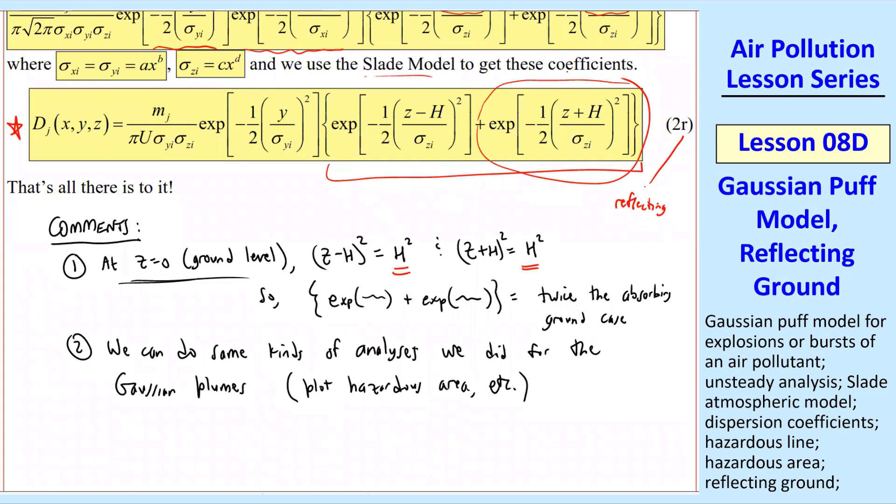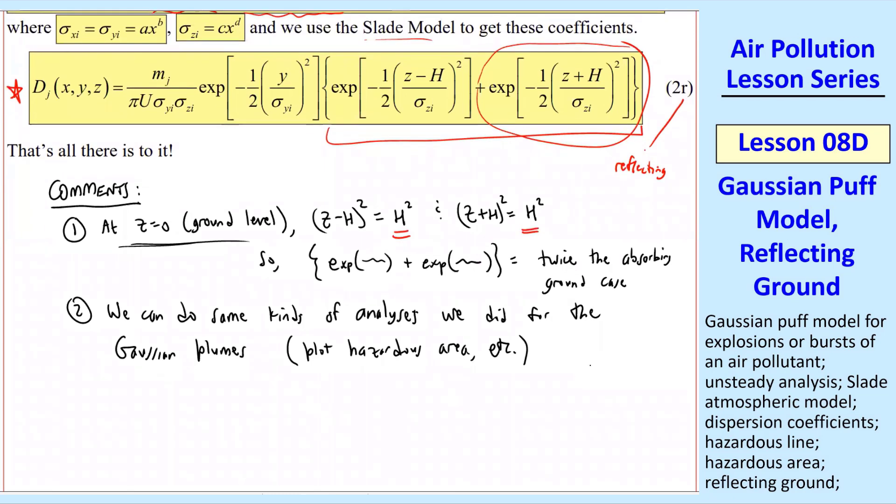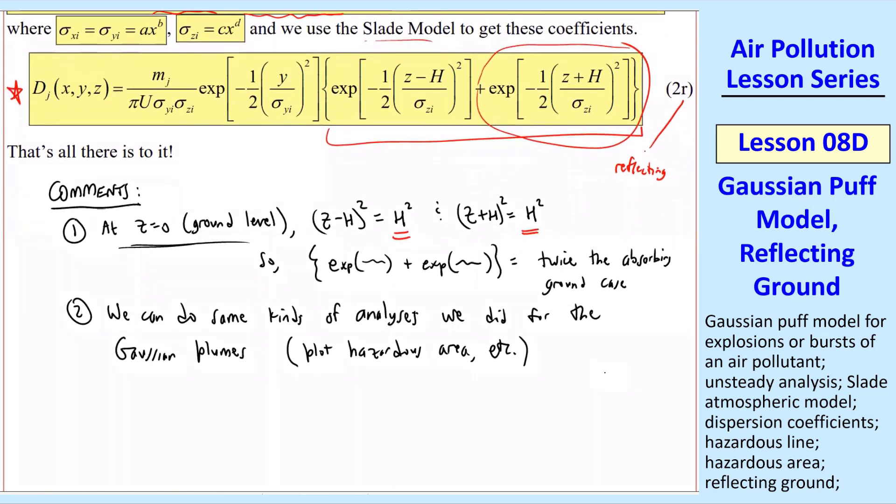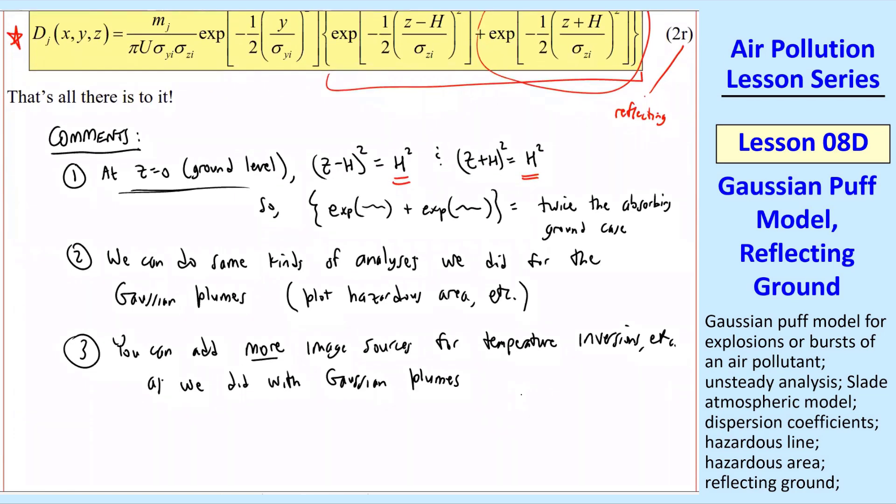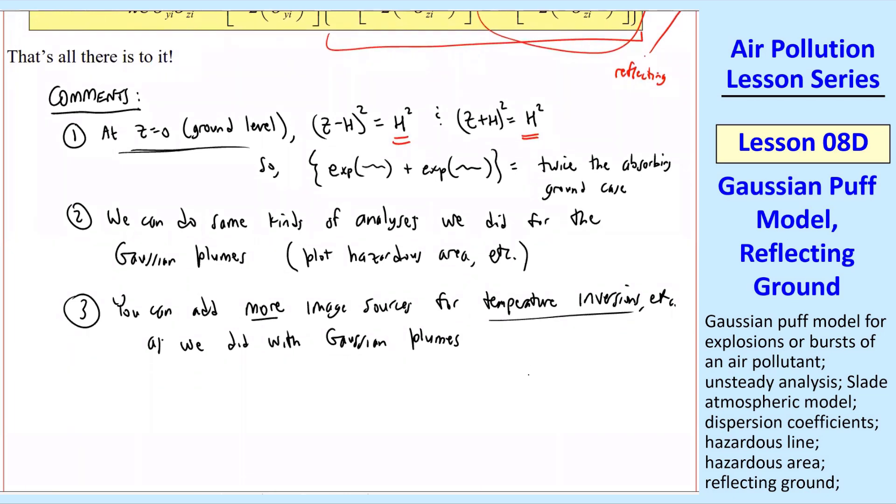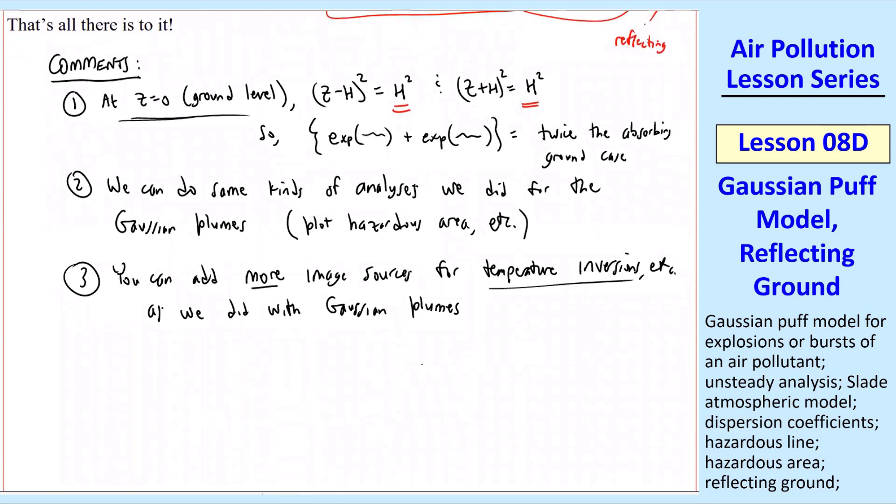Number two, we can do the same kinds of analyses we did for Gaussian plumes. We can plot hazardous area and calculate dose at any x, y, z location. This is very similar to what we did with plumes, just different equations. Number three, you can add more image sources for temperature inversions, just like we did with Gaussian plumes.